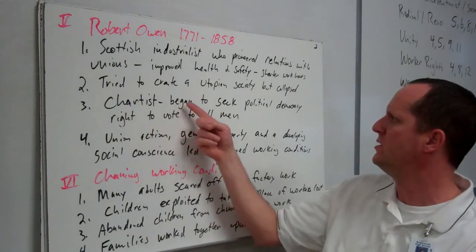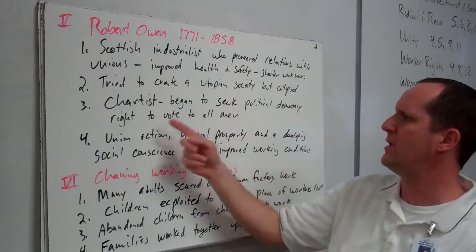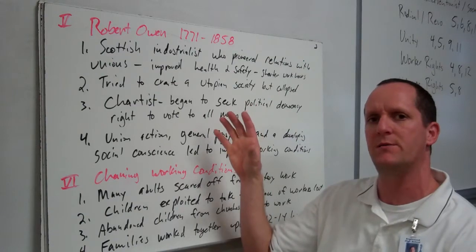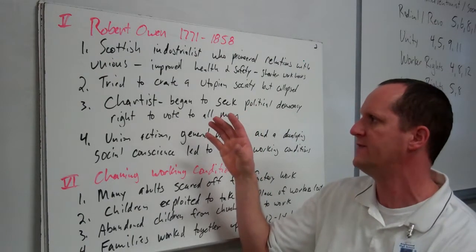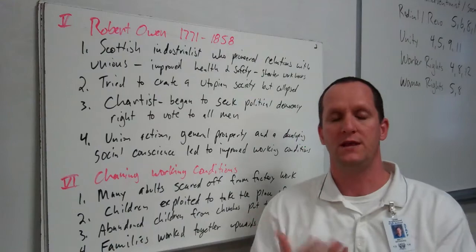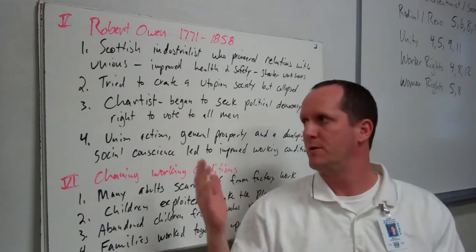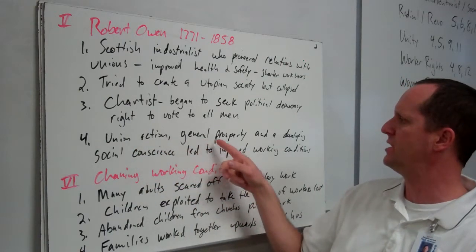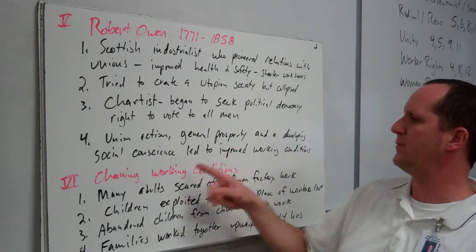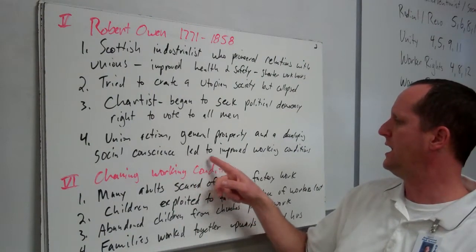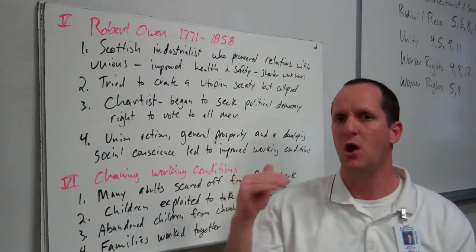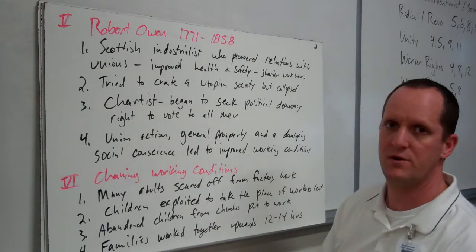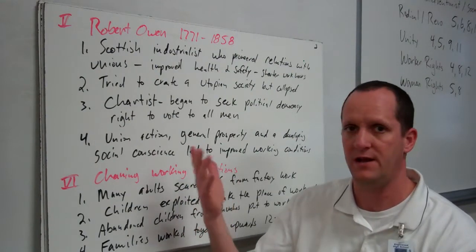Emerging from that were the Chartists, who began to seek political democracy — the right to vote for all men. At this time, mostly in Europe where the Industrial Revolution first took place, only the wealthiest were able to vote. The Chartists said all men should be able to vote. Union action, general prosperity, and developing social concepts led to improved working conditions, and slowly but surely things started to improve in the Industrial Revolution era.